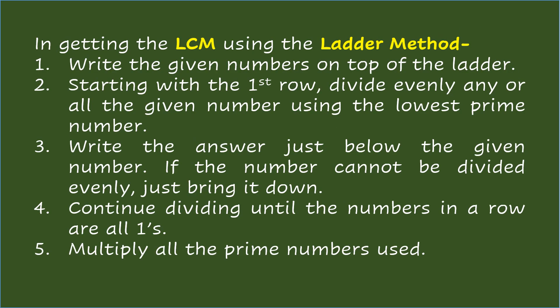In getting the LCM using the ladder method: write the given numbers on the top of the ladder. Starting with the first row, divide evenly any or all of the given numbers using the lowest prime number. Write the answer just below the given number. If the number cannot be divided evenly, just bring it down. Continue dividing until the numbers in a row are all 1's. Multiply all the prime numbers used.